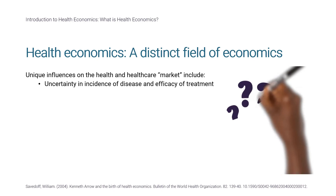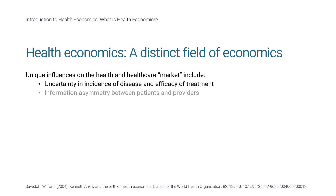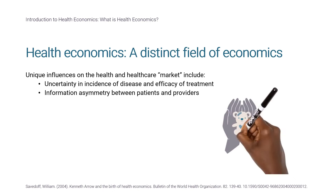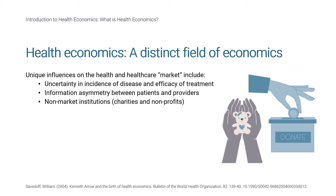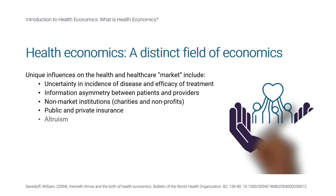Such distinctions include uncertainty — there are special economic problems related to the incidence of disease and the efficacy of treatment — and problems about availability of information, including informational asymmetry between patients and providers. Markets usually depend on consumers maximizing their own utility, but consumers of healthcare may not have a role in making these choices. Physicians may drive demand and inform choices, creating potential for opportunistic behavior. There is also a large role of non-market institutions in healthcare, including not-for-profit organizations and charities, as well as both public and private insurance, which may lead to price distortion.